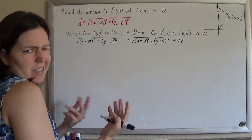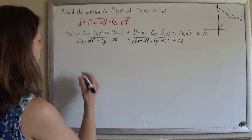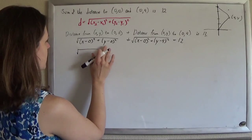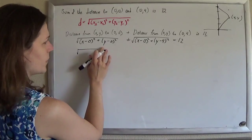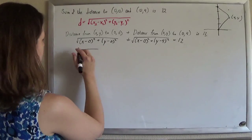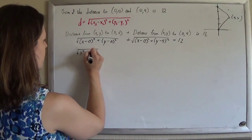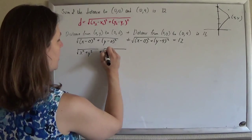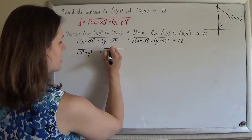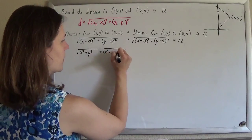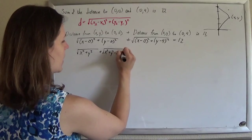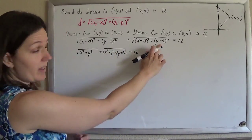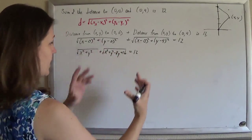Now we'll just clean this up a bit. So this gives us the square root of x² + y², plus the square root of x² + (y−4)² — expanding that out — equal to 12, which becomes the square root of x² + y² plus the square root of x² + y² − 8y + 16 equals 12.